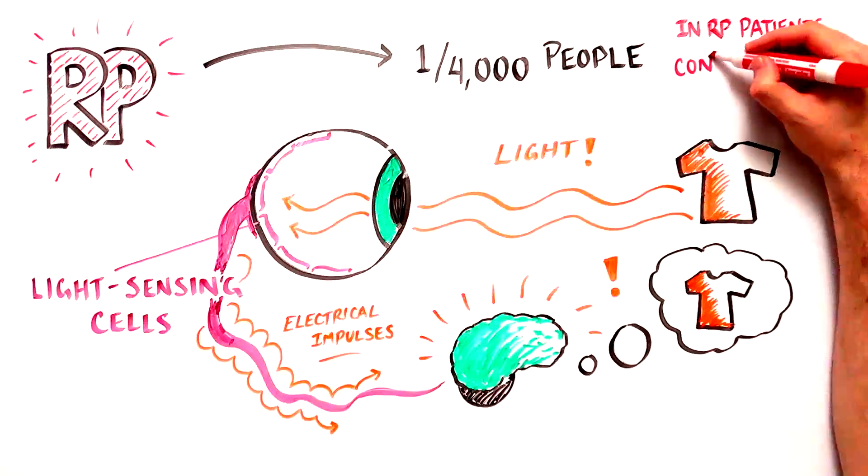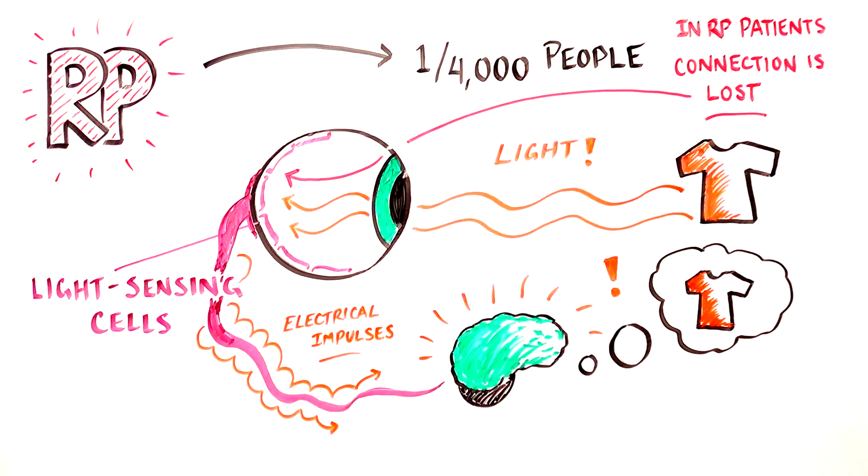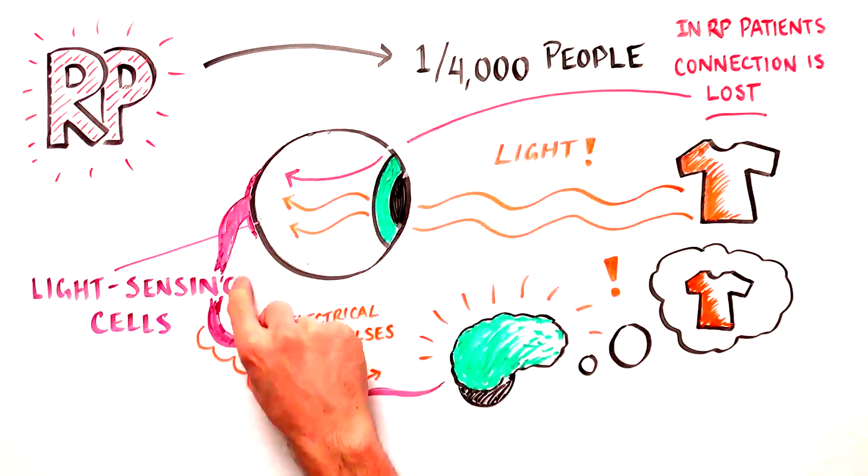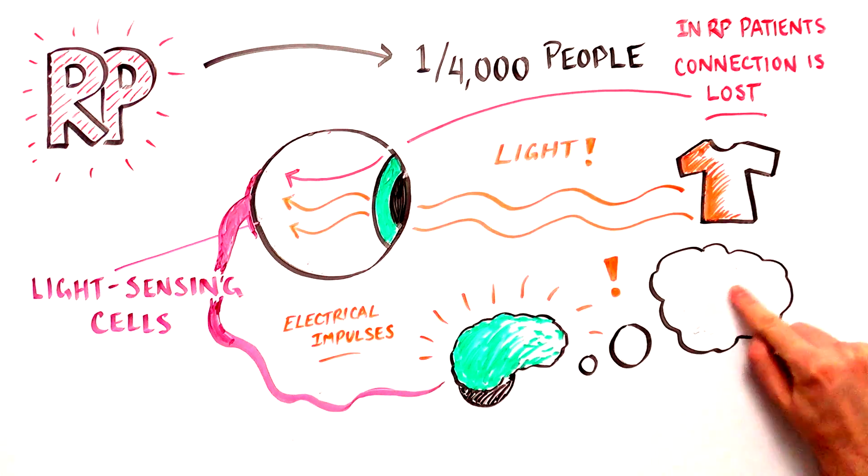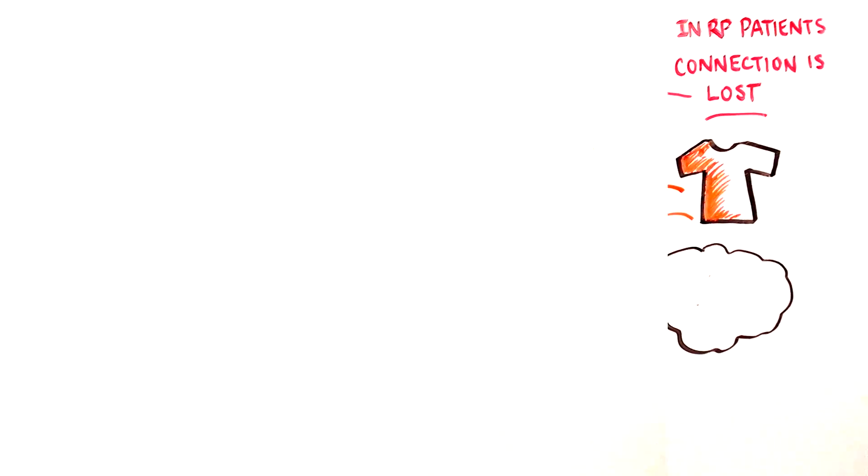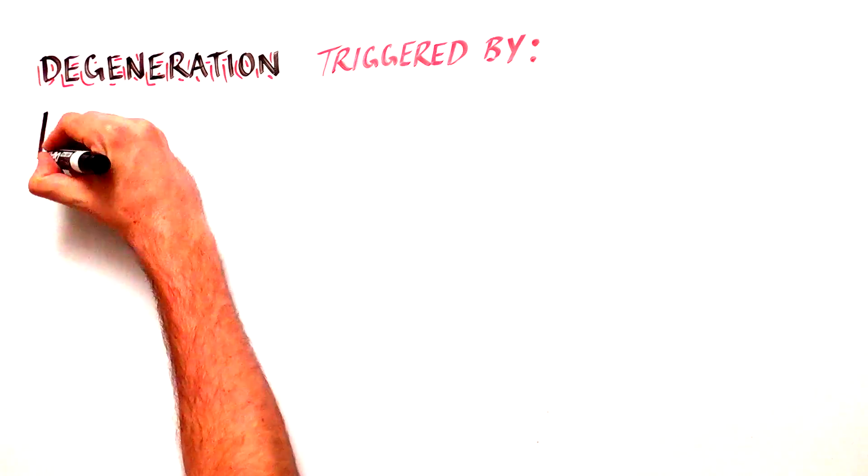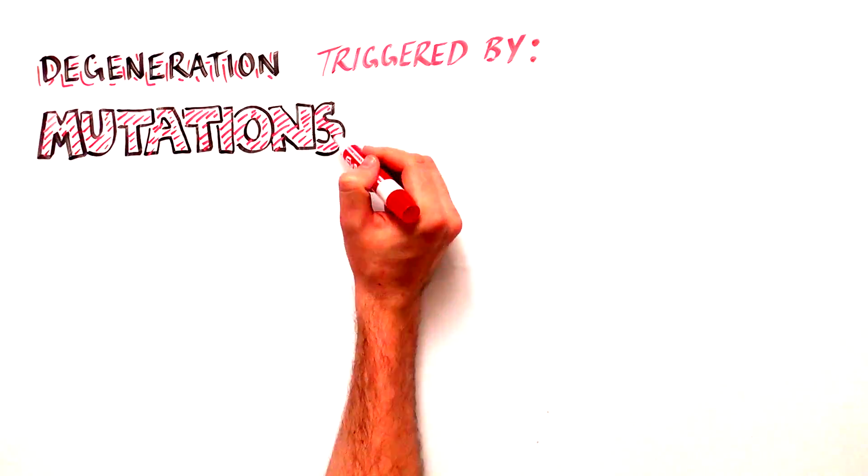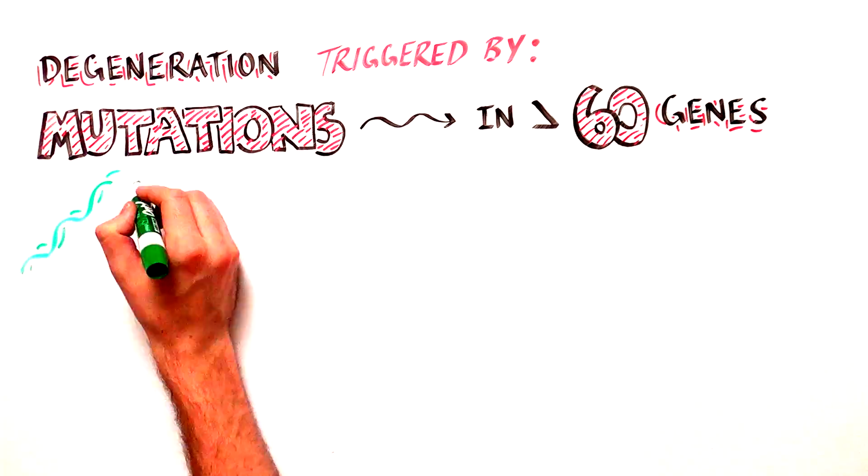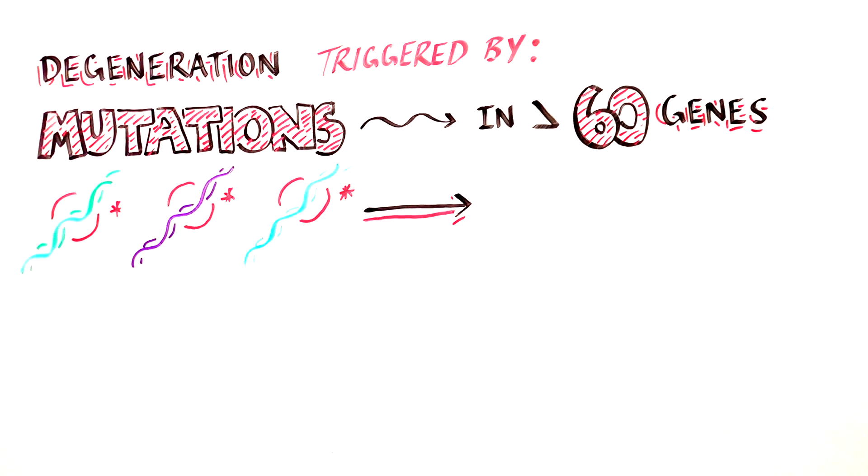In patients with RP, light-sensing cells degenerate, breaking the connections between the eye and the brain. The degeneration of light-sensing cells can be triggered by mutations in more than 60 different genes that cause the cells to fail to function properly and die.